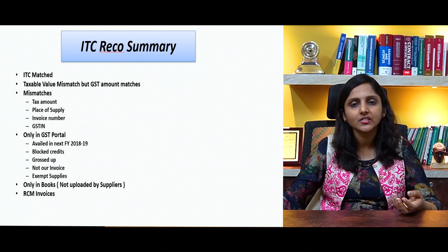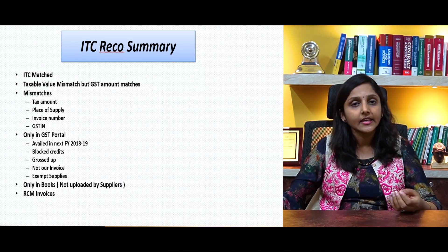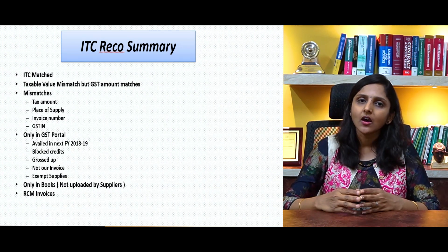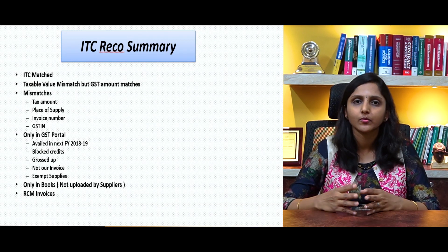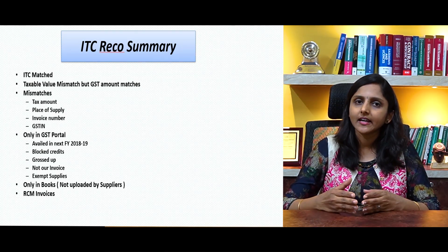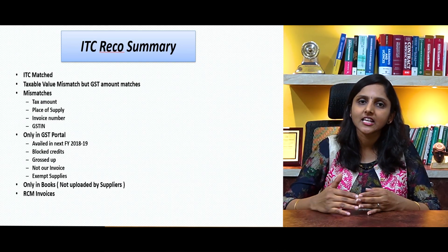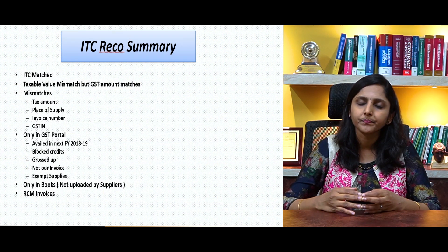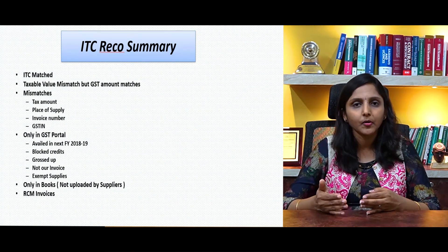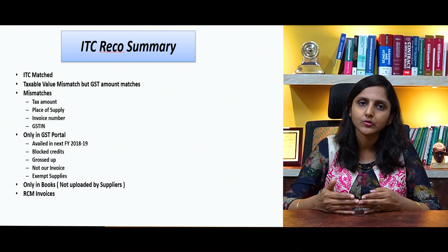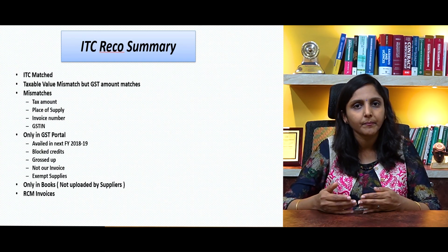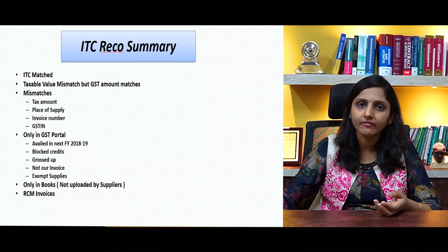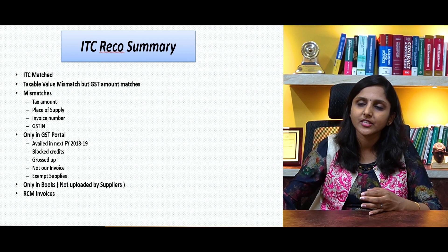There are apprehensions as to whether credits not uploaded into 2A can be claimed. However, if you look into section 16 of the CGST Act, what it requires is the condition that tax should have been paid to the government. Can we say that mere reflection in GSTR-2A means tax has been paid, or that non-reflection in 2A means the supplier has not paid taxes? What we can do for credits not uploaded by the supplier — probably they uploaded it as B2C — is obtain a confirmation letter from the supplier confirming that taxes have been discharged, which helps us safeguard these credits and avoid reversing them.